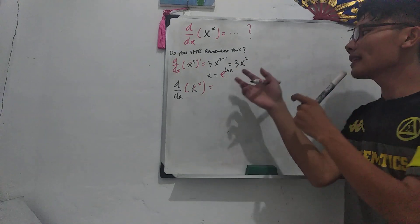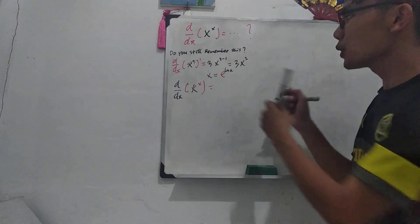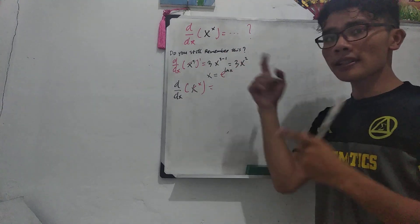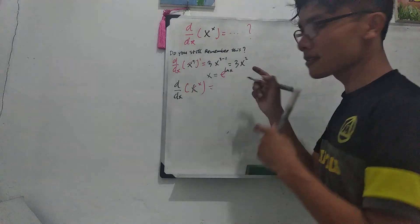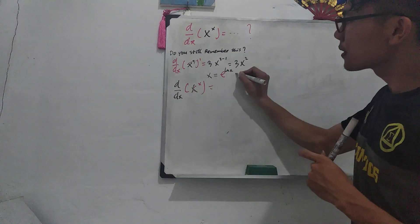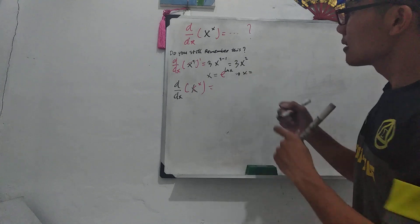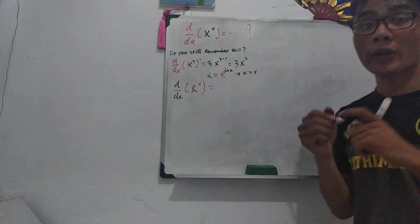So I can do this because this doesn't change anything. So if you see this, e and ln they just cancel, you know, so it's other, so it doesn't change my function. So this one is still same as x, same as x. So we can do that, okay?